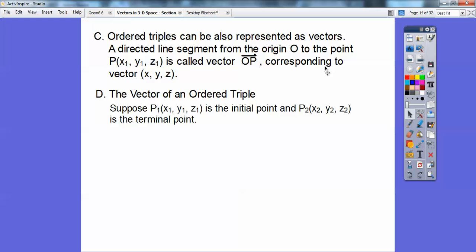So the vector of an ordered triple is just like an ordered pair. So suppose we had point 1, (x₁, y₁, z₁), and point 2, (x₂, y₂, z₂), is the terminal point, and this is the initial point right here. Just like the ordered pair, the ordered triplet of the vector P₁P₂ is we just subtract the x's, subtract the y's, and subtract the z's. So x₂ minus x₁, and you've got to do the second one minus the first one, and then the second y minus the first y, and similarly for the z's.